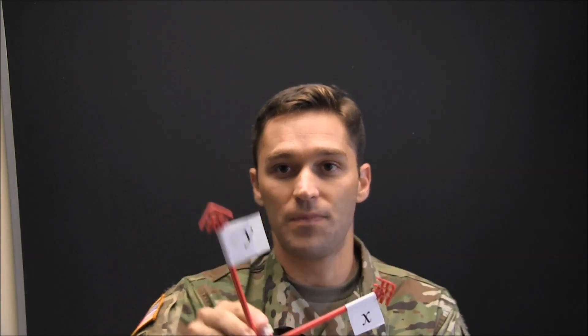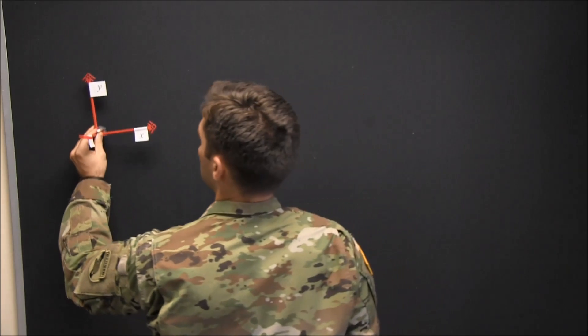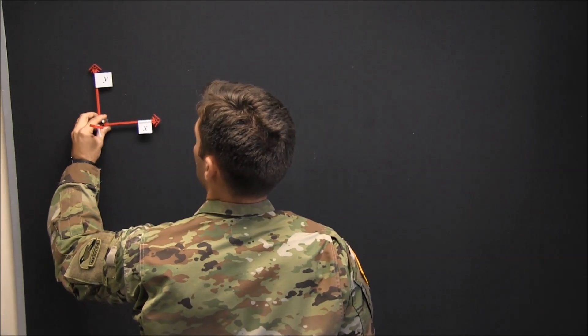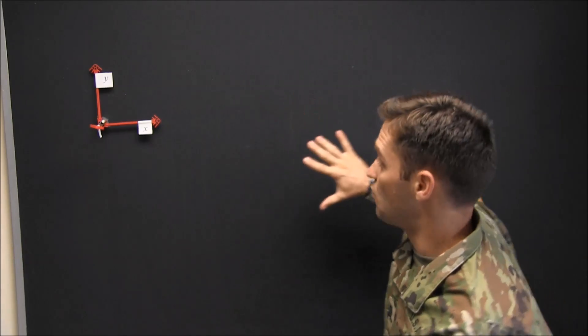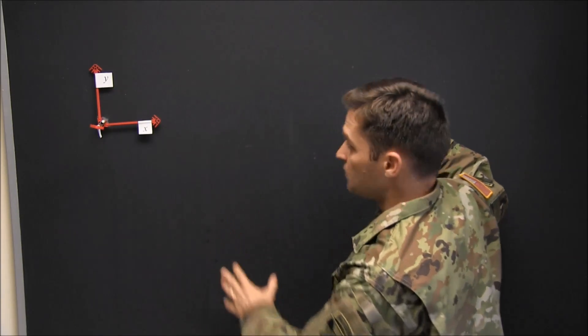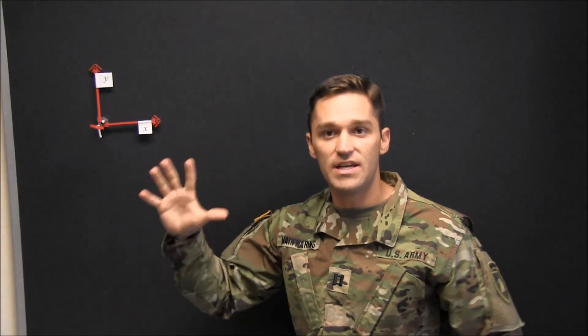In this course, everything will be in static equilibrium, meaning it will be at rest or at constant velocity. Let's start with 2D equilibrium. In this condition, we have to define our axes, and I'm going to define the 2D equilibrium in the y and x direction. This vertical and horizontal direction make up the xy plane, which is the surface of this board. Any objects we have living inside that space are confined to the board.